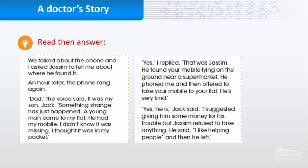Yes, I replied. That was Jassim. He found your mobile lying on the ground near a supermarket. He phoned me and then offered to take your mobile to your flat. He is very kind. Yes, he is, Jack said. I suggested giving him some money for his trouble, but Jassim refused to take anything. He said, I like helping people, and then he left.